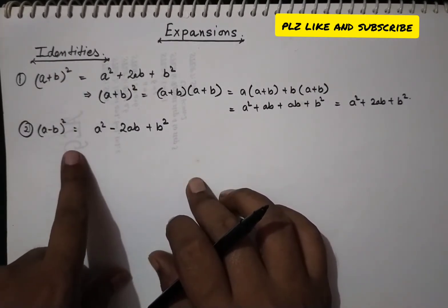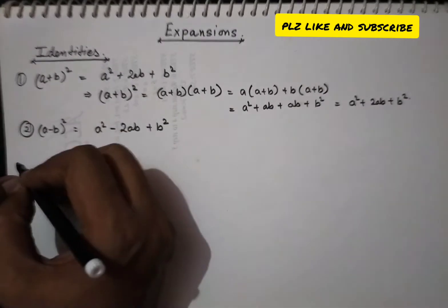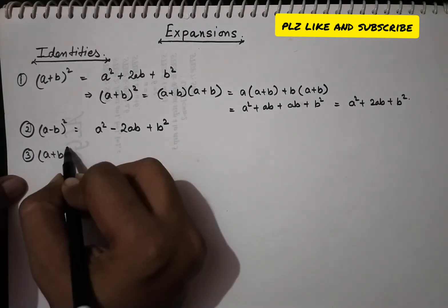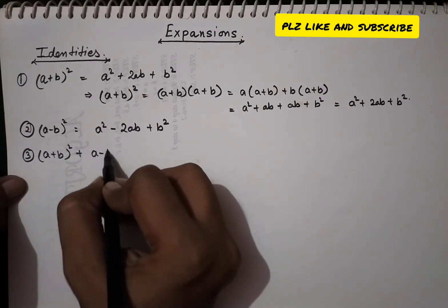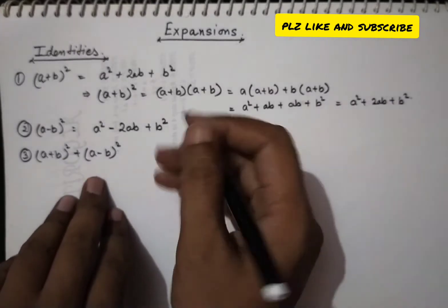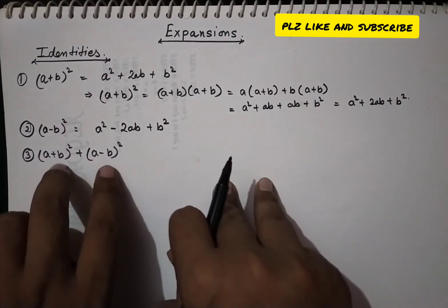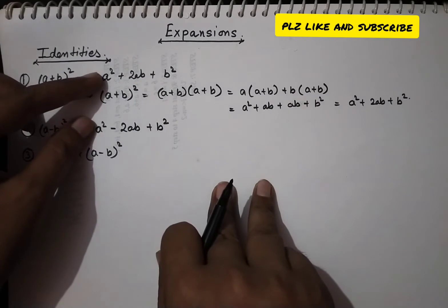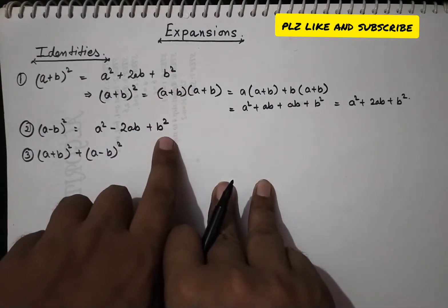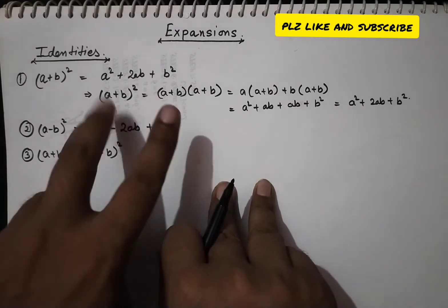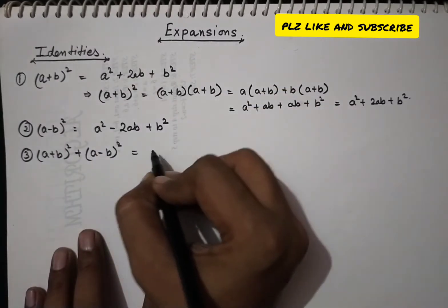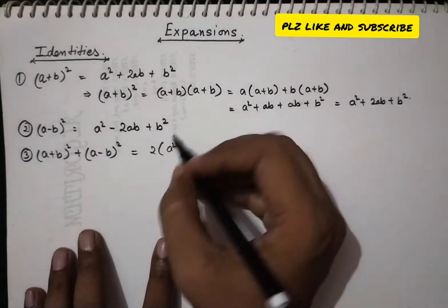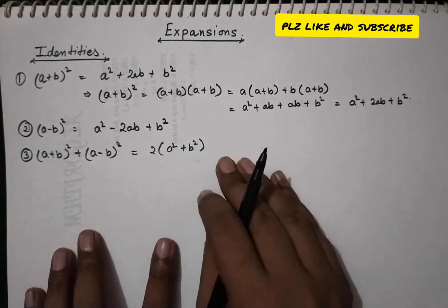With the help of these two identities — (a + b)² and (a − b)² — we get a few more identities. If we add them: (a + b)² + (a − b)², the +2ab and −2ab cancel out, and we are left with 2a² + 2b².